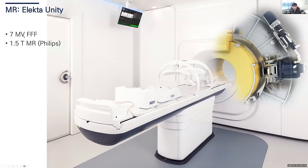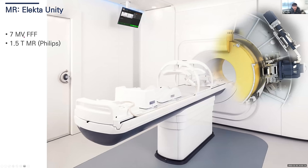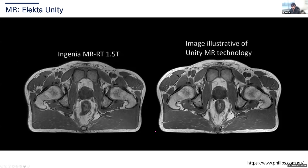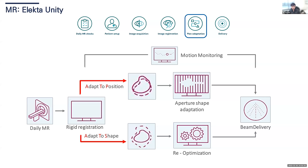The Elekta Unity has a 7 MV flattening filter-free X-ray with a 1.5 Tesla Philips MR. The advantage is you can easily see soft tissue during treatment. You can clearly see the prostate and other soft tissue — totally different from CBCT or KVCT. The Unity offers two adaptation processes: ATP (adapt to position) and the more difficult ATPS (adapt to shape), which requires re-optimization for the best plan.